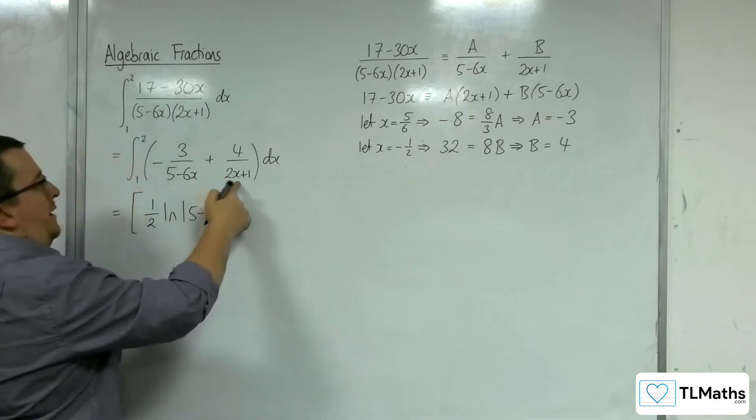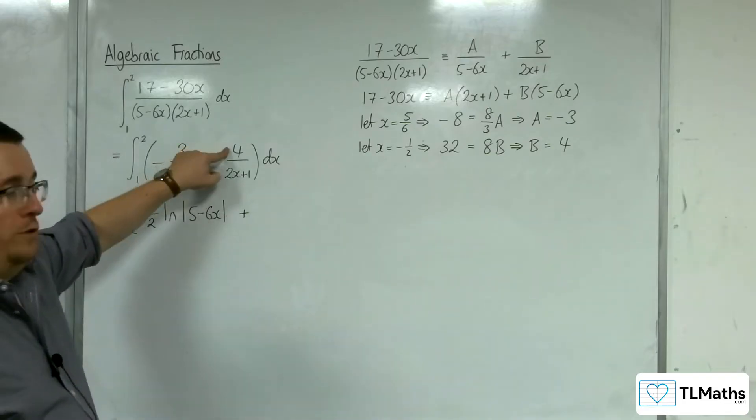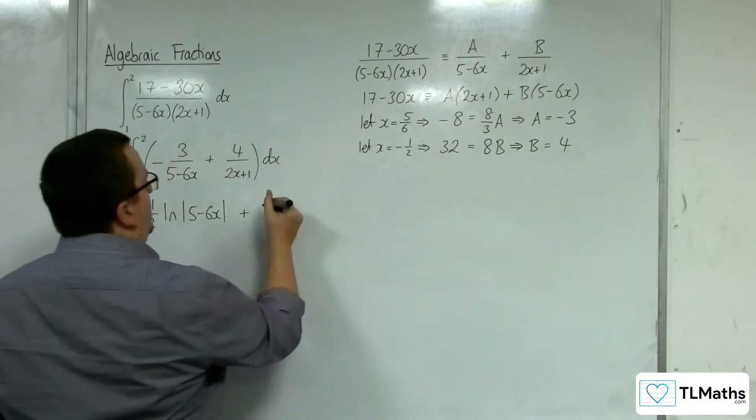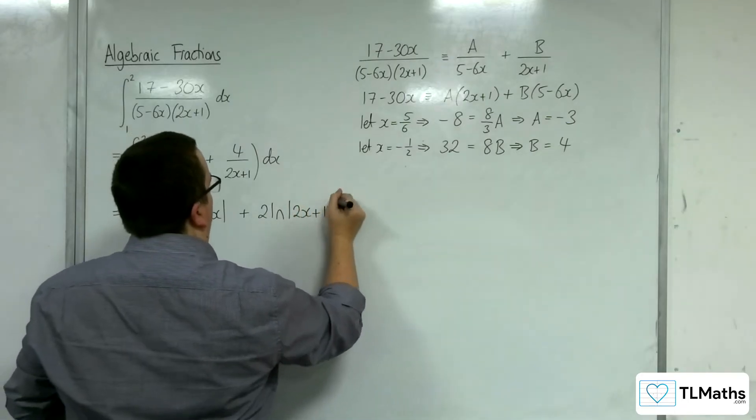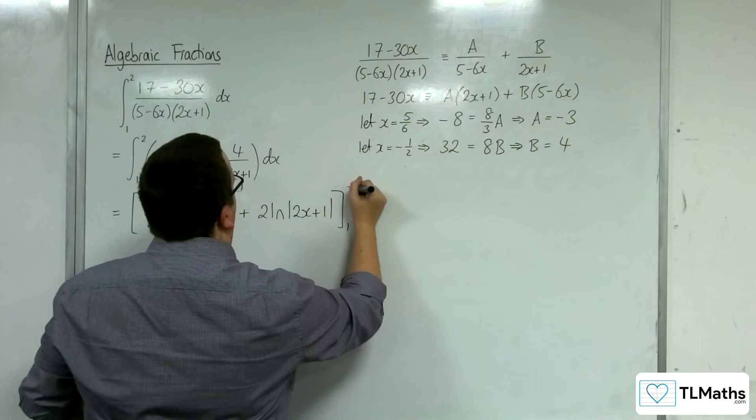Plus, now the denominator here differentiates to 2. We've got 4 on the top, so we've got twice as much as what we need. So, 2 lots, the logarithm of mod 2x plus 1. And we're going to evaluate that between 1 and 2.